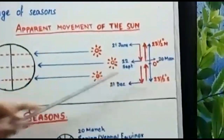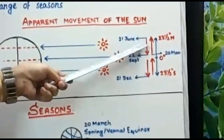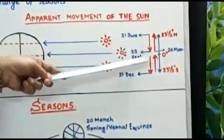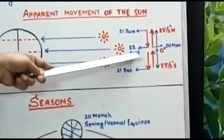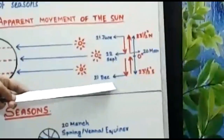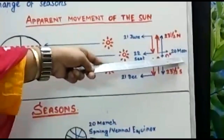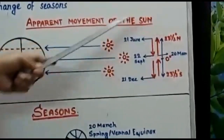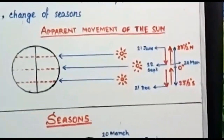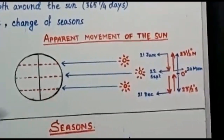If we consider that the sun is at 23.5 degrees north on 21st June, then after three months when it reaches the equator the date is 22nd September. On 21st December it reaches 23.5 degrees south, and again on 20th March it reaches the equator. So this is the mechanism of the sun's apparent movement — the limit to the north is the Tropic of Cancer and to the south is the Tropic of Capricorn.